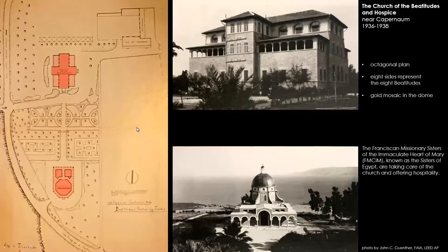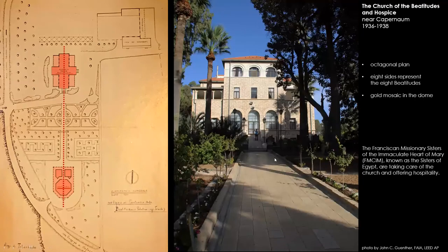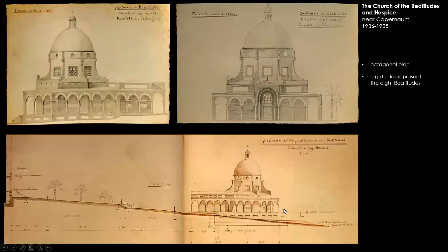On the top of the hill there is the hospice, on a center line with the church — here you see it in cruciform plan and a view of that building upon completion and as it appears today. A couple of elevational studies by Barluzzi, along with the site section drawing, where you see the hill descending and then a base is formed for the new Church of the Beatitudes with the dome rising up.